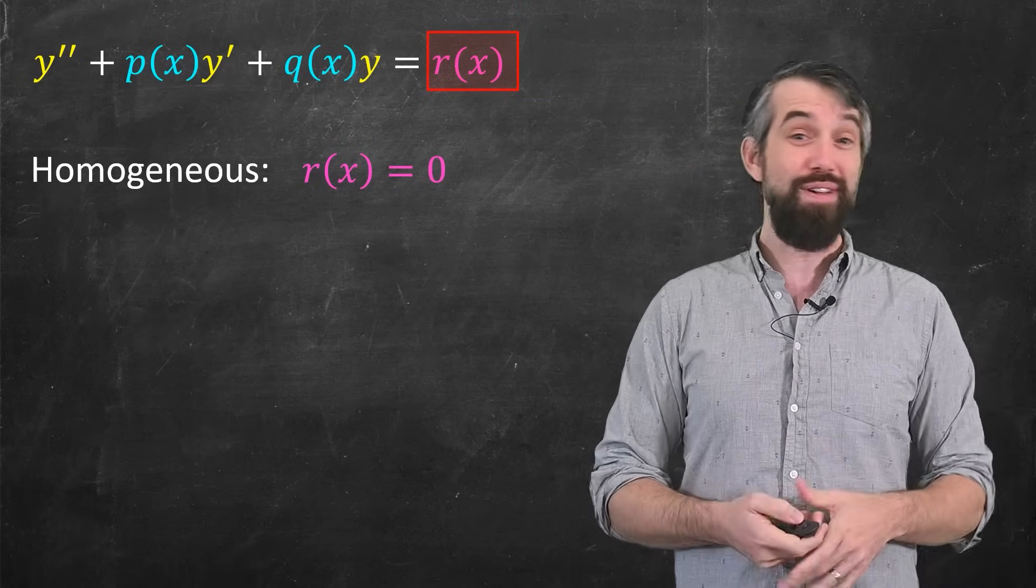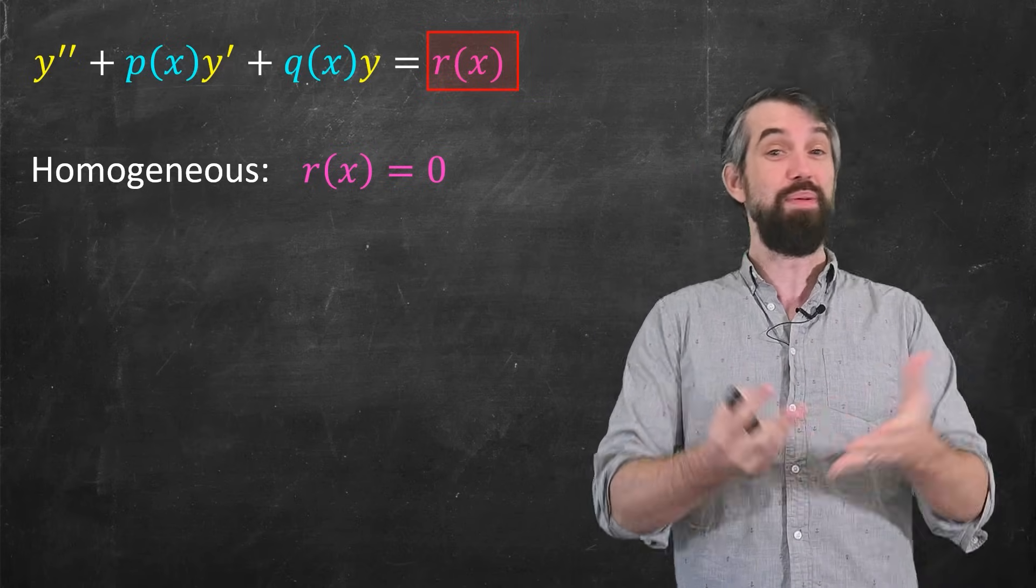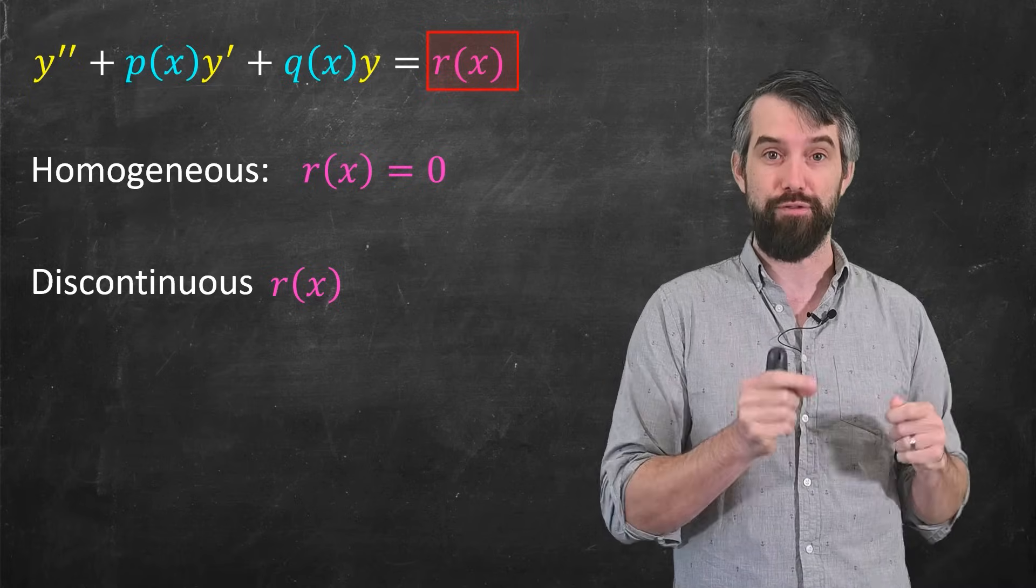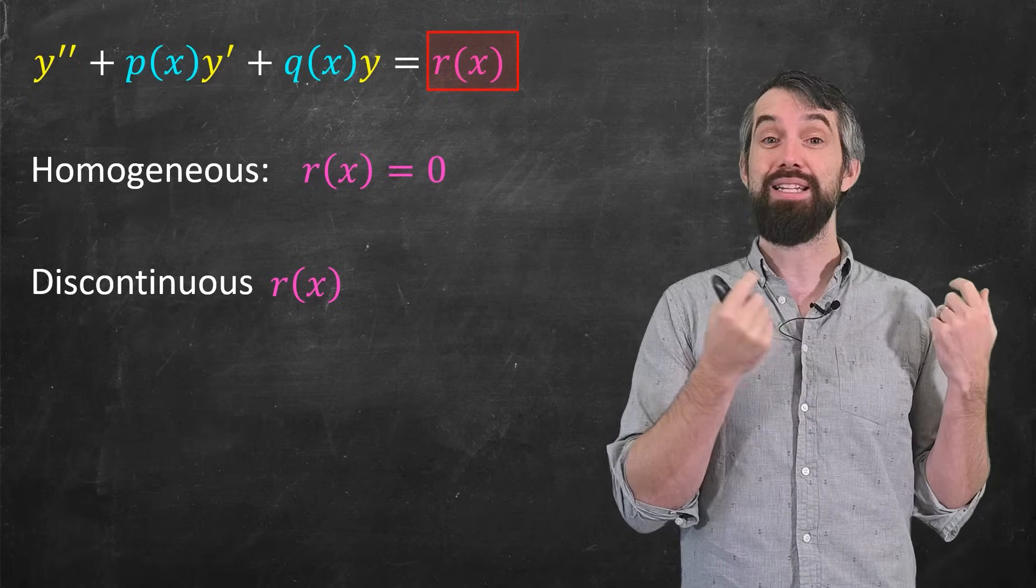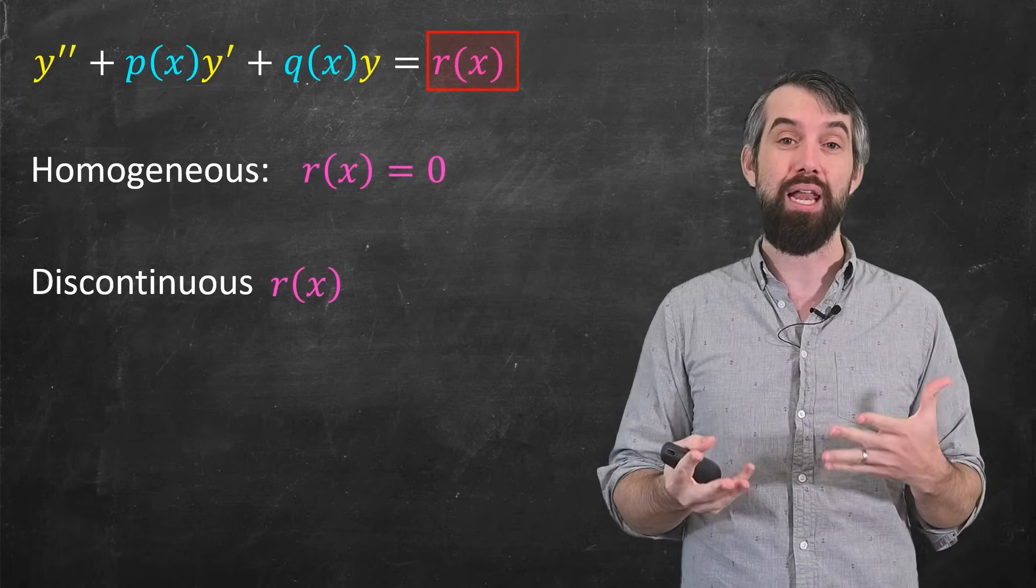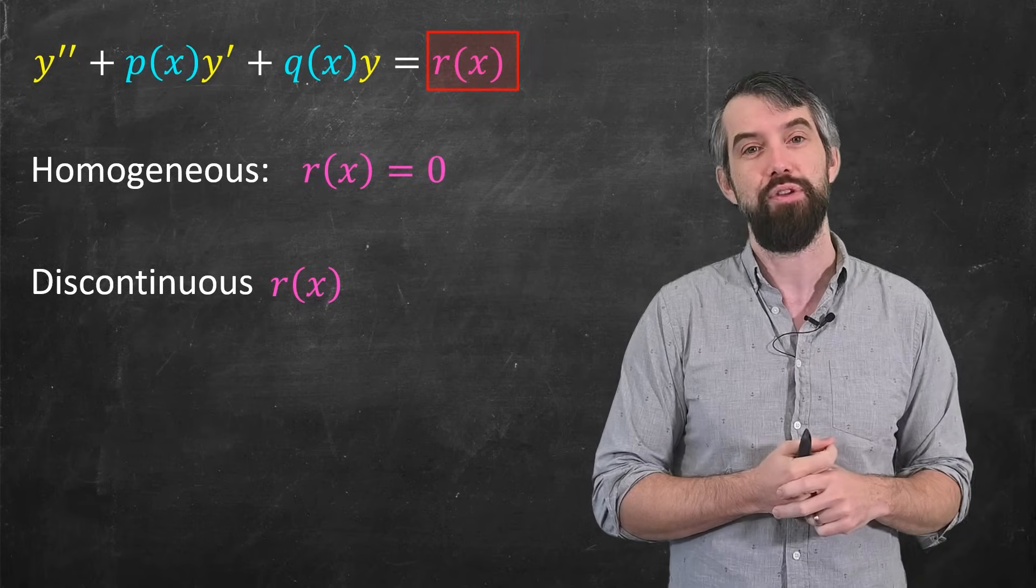And indeed, when you study the R of x, there's lots of different cases, but you might have something like it being discontinuous. That's going to imply a different methodology. So throughout this video, we're going to analyze the order, we're going to analyze the linearity, and we're going to analyze the inhomogeneity if there is one.